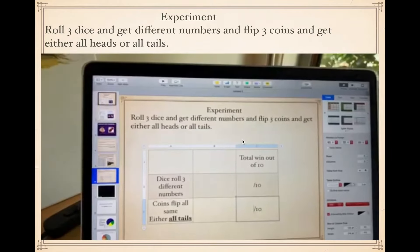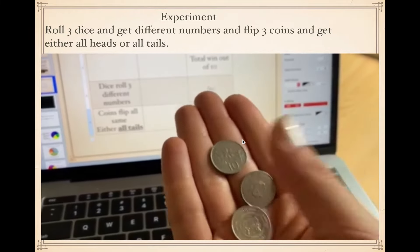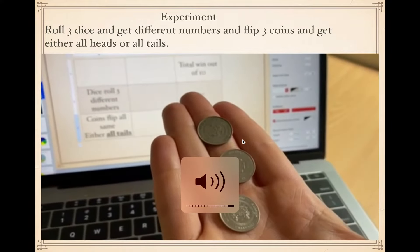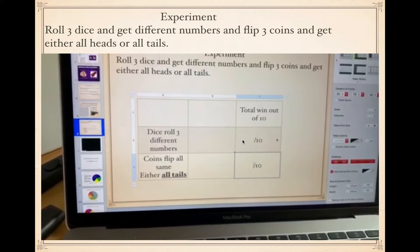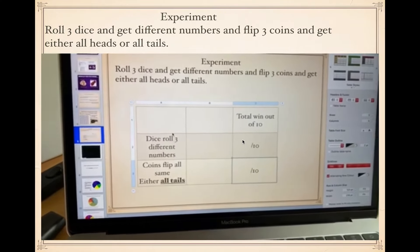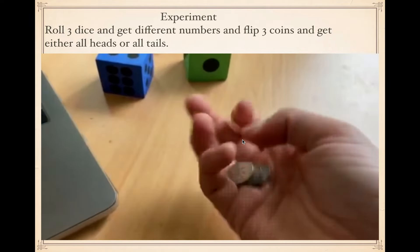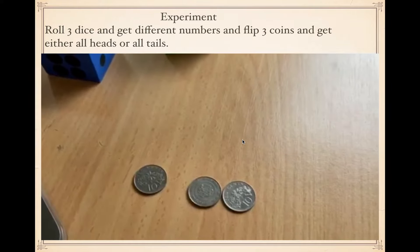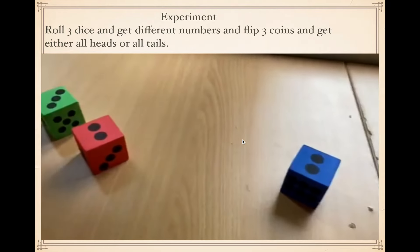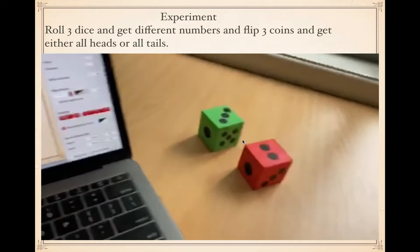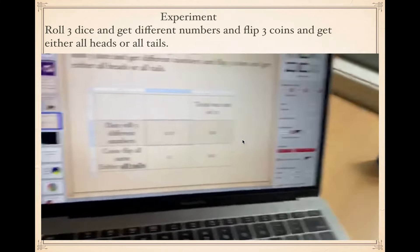Let's watch this video of the experiment. We're going to toss three coins and see if we can get all the same — all heads or all tails — or roll three dice and get all three different numbers. We'll record out of ten total wins for both separately. On the first try: zero for coins because we got two tails and one head, and zero for dice because we rolled two twos and a three. Second try: one for dice, zero for coins.